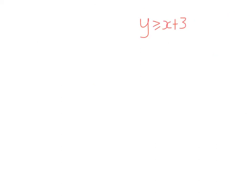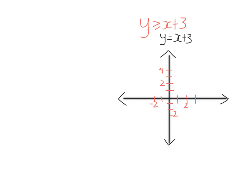So let's return to the inequality y is greater than or equal to x plus 3. The first thing I'm going to do is graph y equals x plus 3. I set up my Cartesian plane with y-axis and x-axis. Because it's y equals with y by itself, I'll use the gradient intercept method. The gradient is 1 and the y-intercept is 3. I mark the y-intercept of 3, then go 1 to the right and 1 up to find the second point, and join them up.